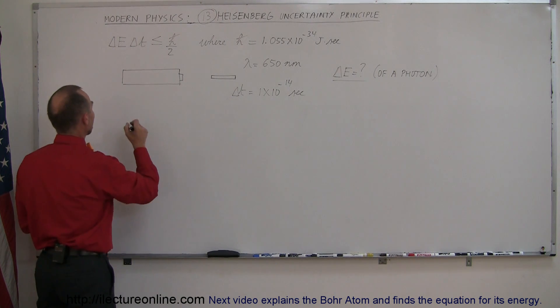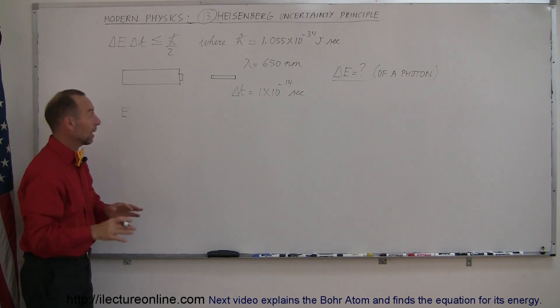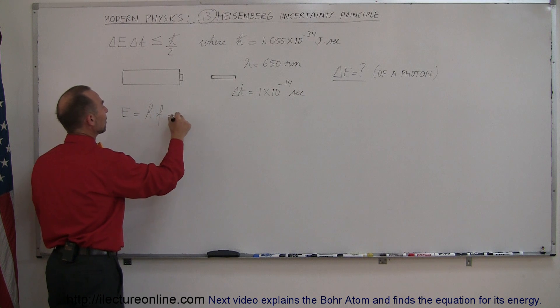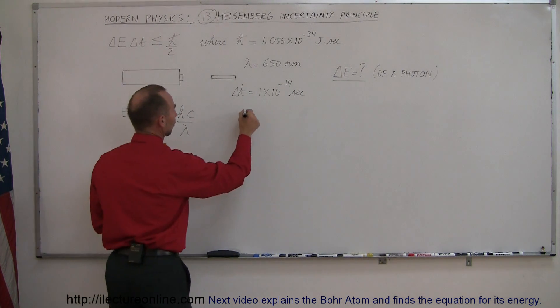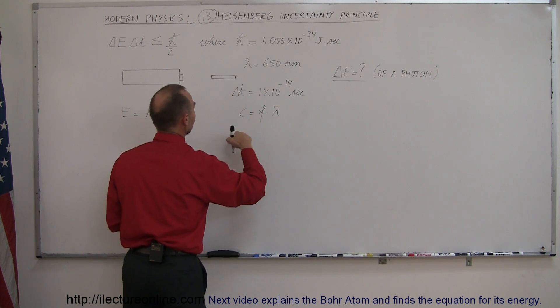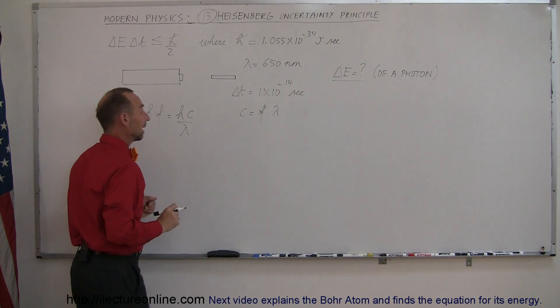So we're trying to find the energy of a photon, and normally we'd say that's not a problem because we know the energy is equal to h times the frequency, which means it's equal to hc/λ. Remember that the speed of light is equal to the frequency times the wavelength, so we can say that f can be written as c/λ.